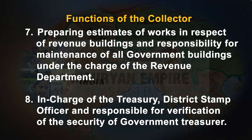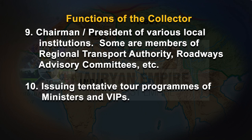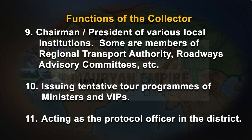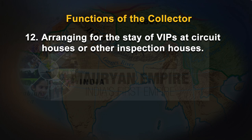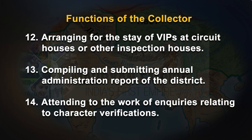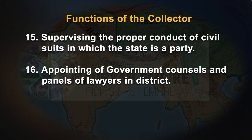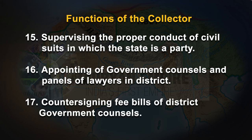In charge of the Treasury, District Stamp Officer, and responsible for verification of the security of government treasury. Chairman or president of various local institutions; member of regional transport authority, roadways advisory committees, etc. Issuing tentative tour programs of ministers and VIPs. Acting as a protocol officer in the district. Arranging for the stay of VIPs at circuit houses or other inspection houses. Compiling and submitting annual administrative report of the district. Attending to enquiries relating to character verifications. Supervising the proper conduct of civil suits in which the state is a party. Appointing government counsels and panels of lawyers in the district. Countersigning fee bills of district government counsels.